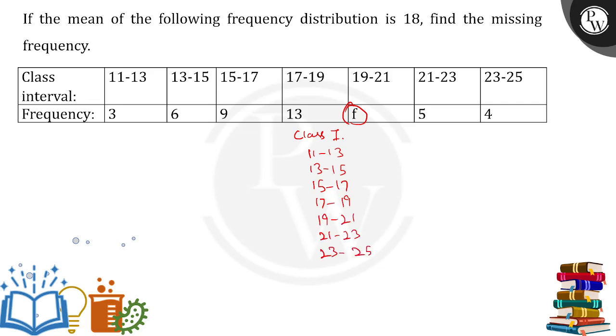These are all the class intervals we have. The mid value, that is xi, that will be what: 12, 14, 16, 18, 20, 22, and 24. So next thing is frequency itself.